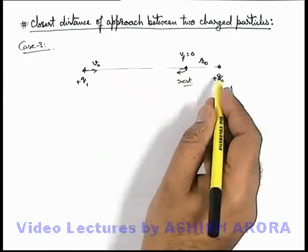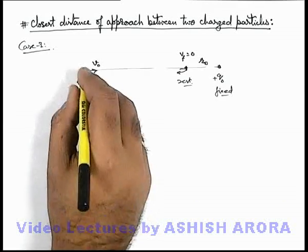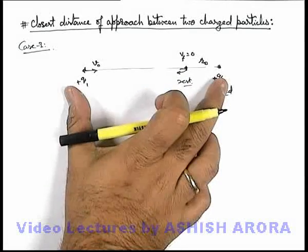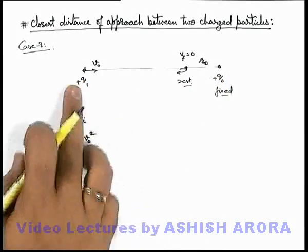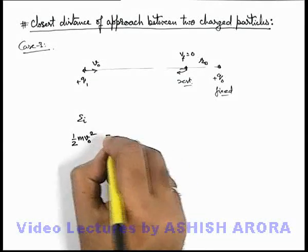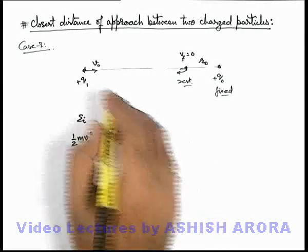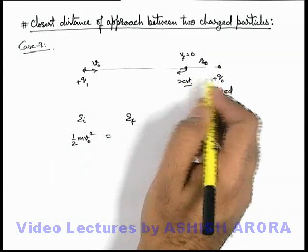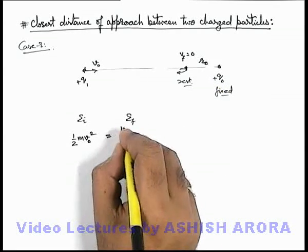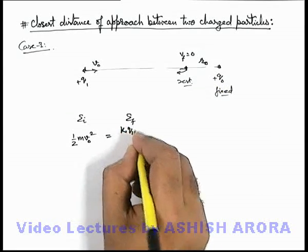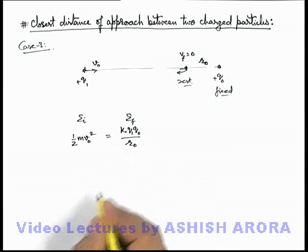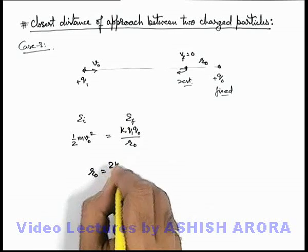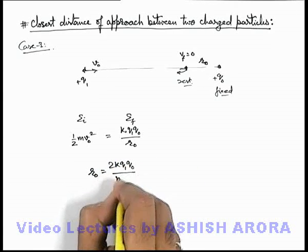When q₁ is far away, the initial total energy of the system is ½mv₀², since at very large separation there is no potential energy due to interaction. This must equal the final energy at the closest distance of approach r₀, where kinetic energy is zero. So the only energy is the interaction energy k·q₁·q₀/r₀. From this, we find r₀ = 2k·q₁·q₀ / (mv₀²).